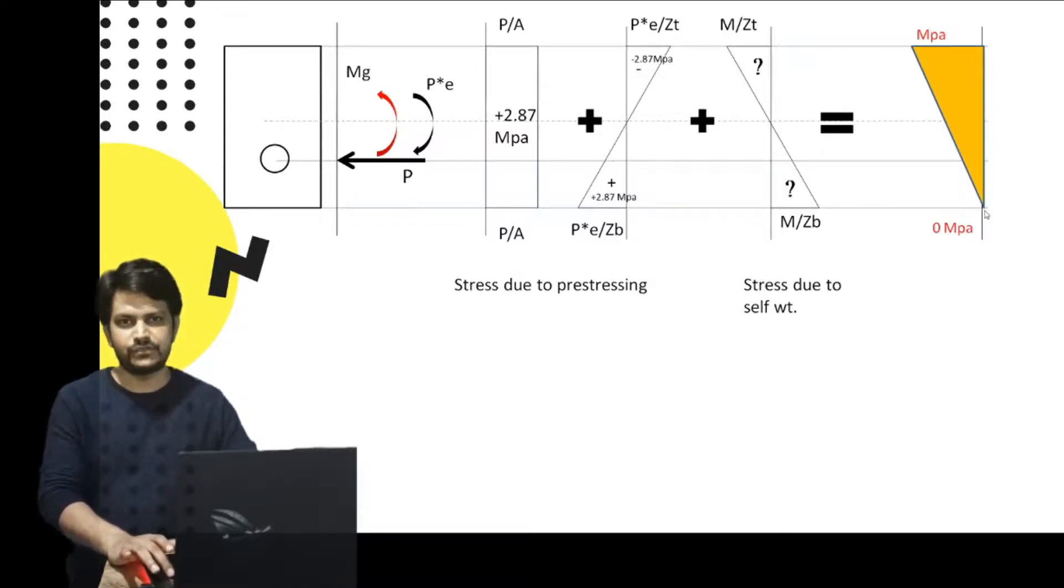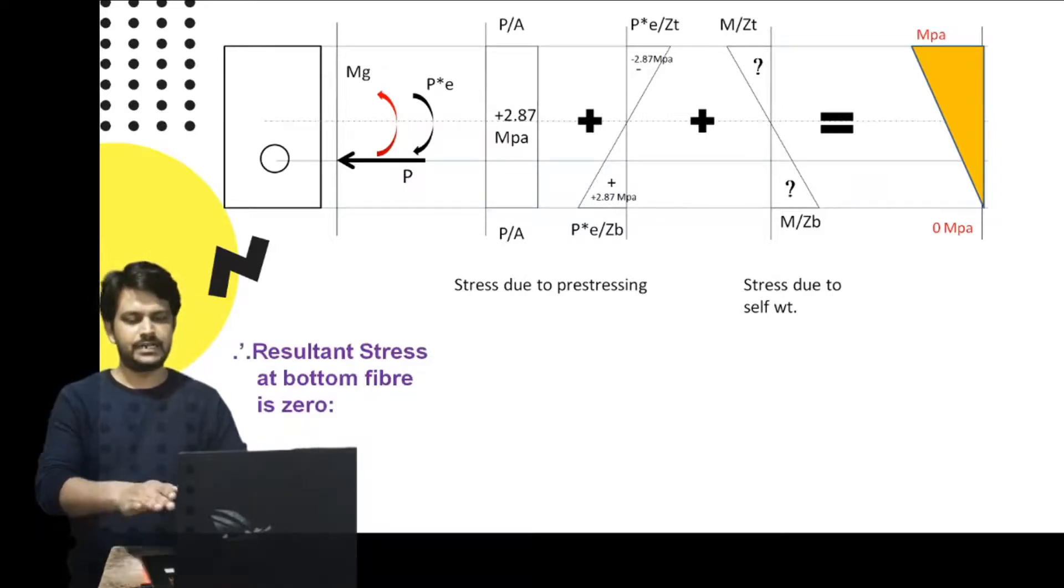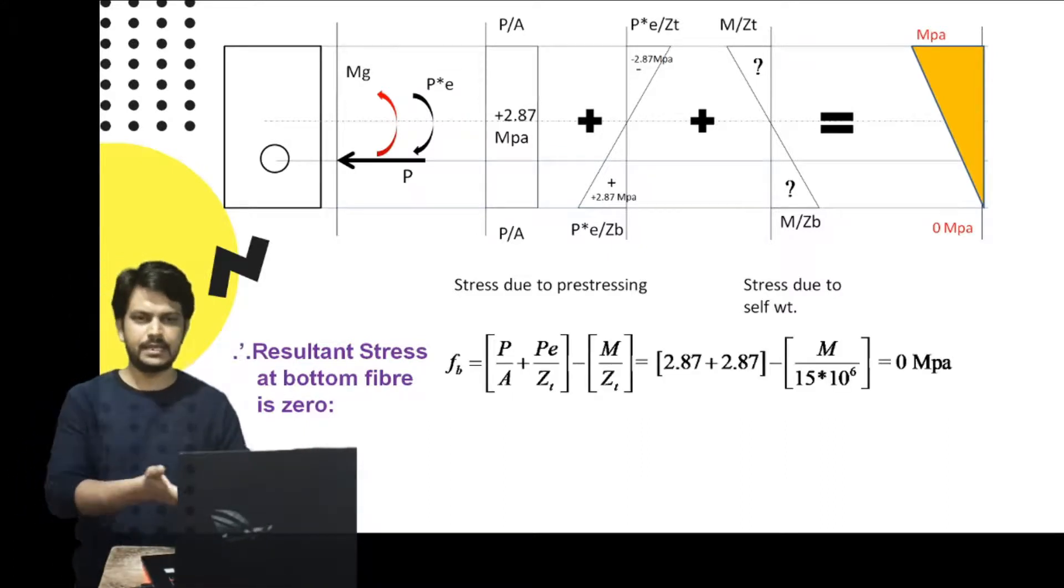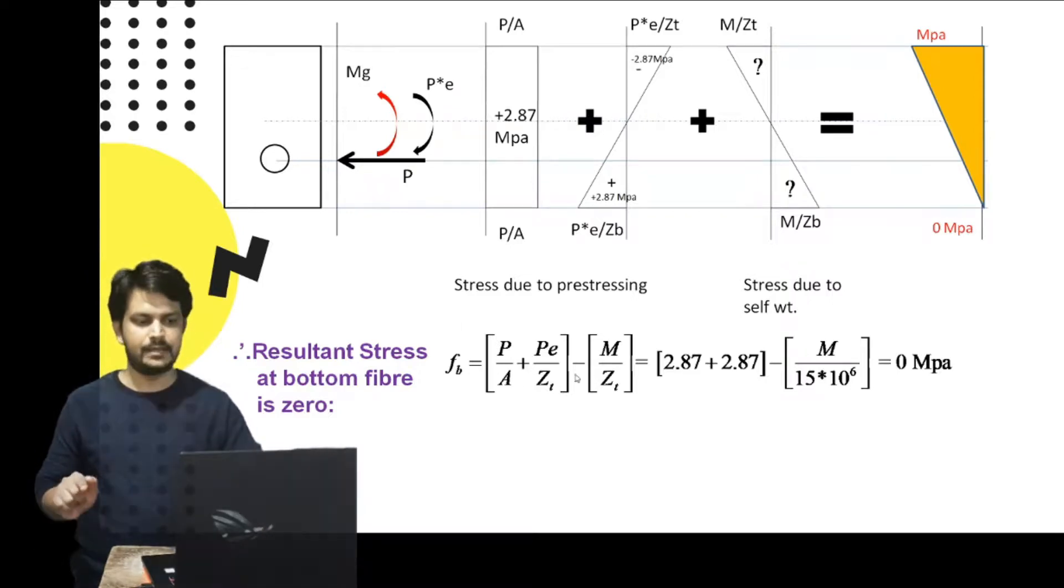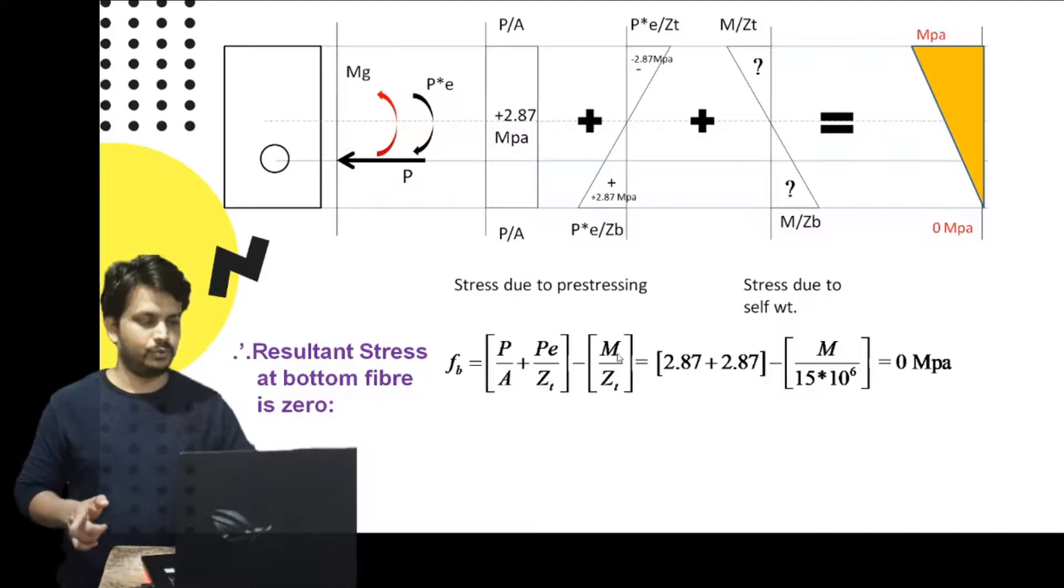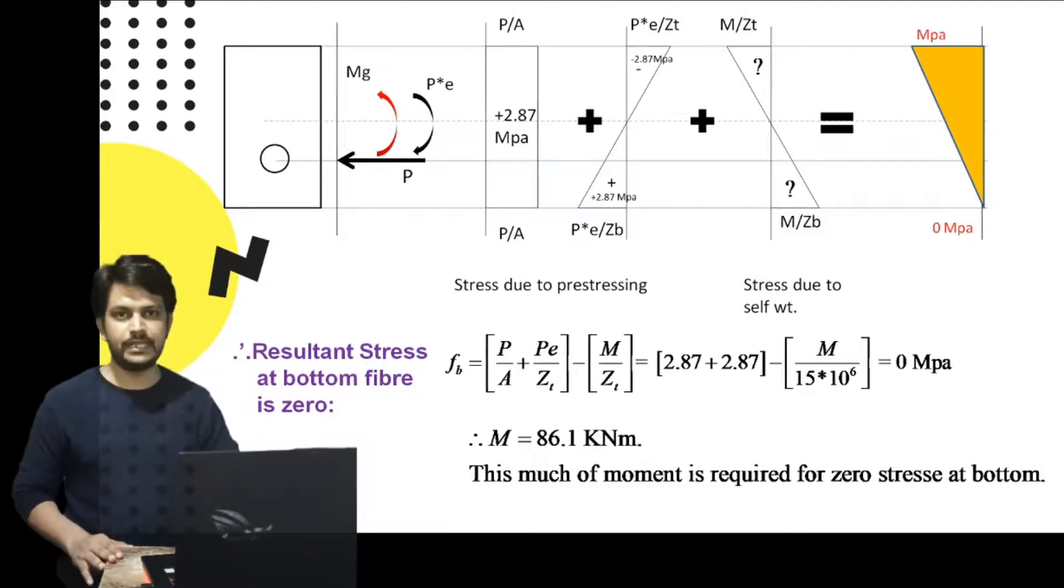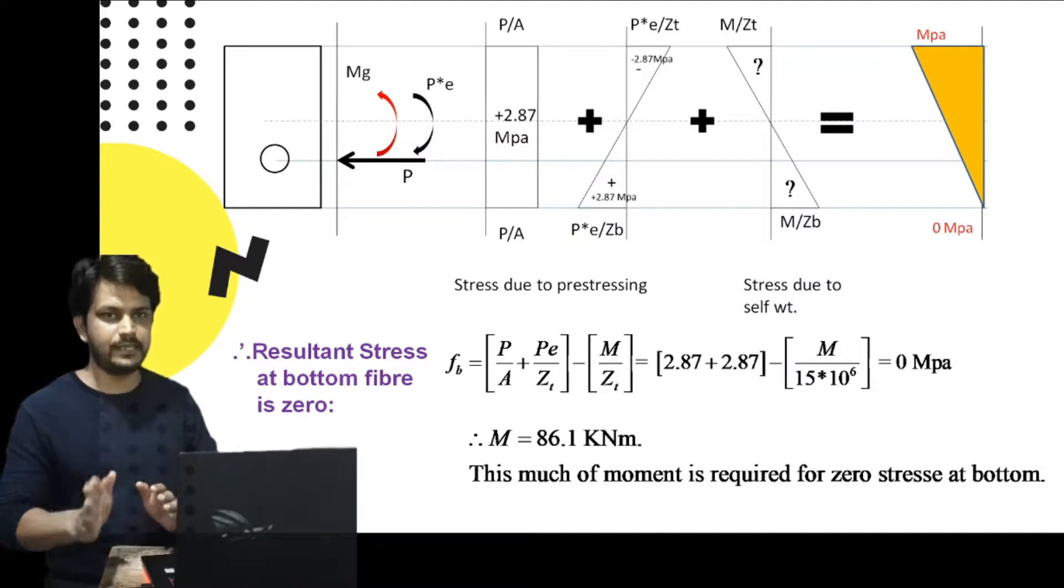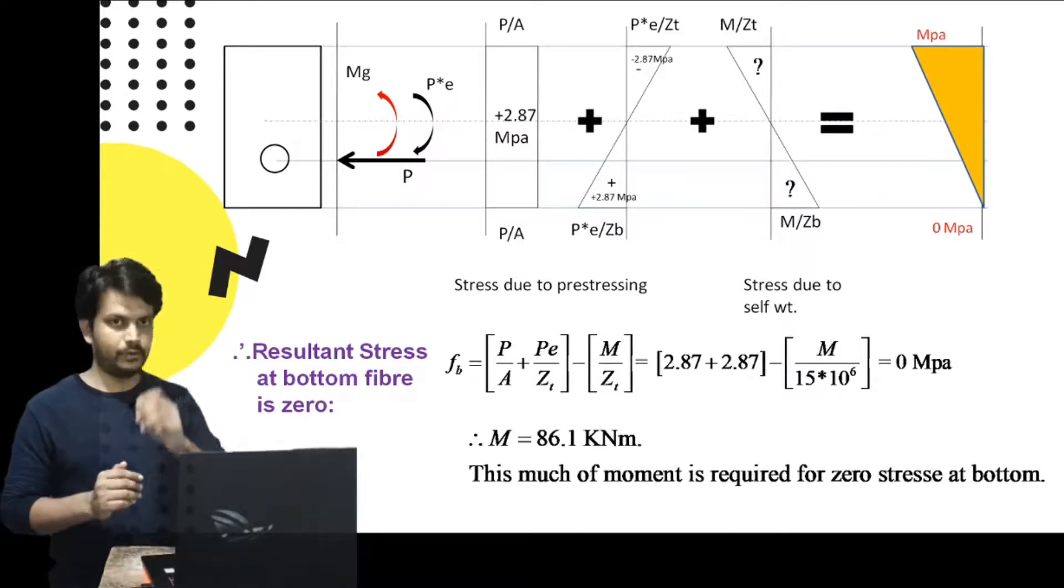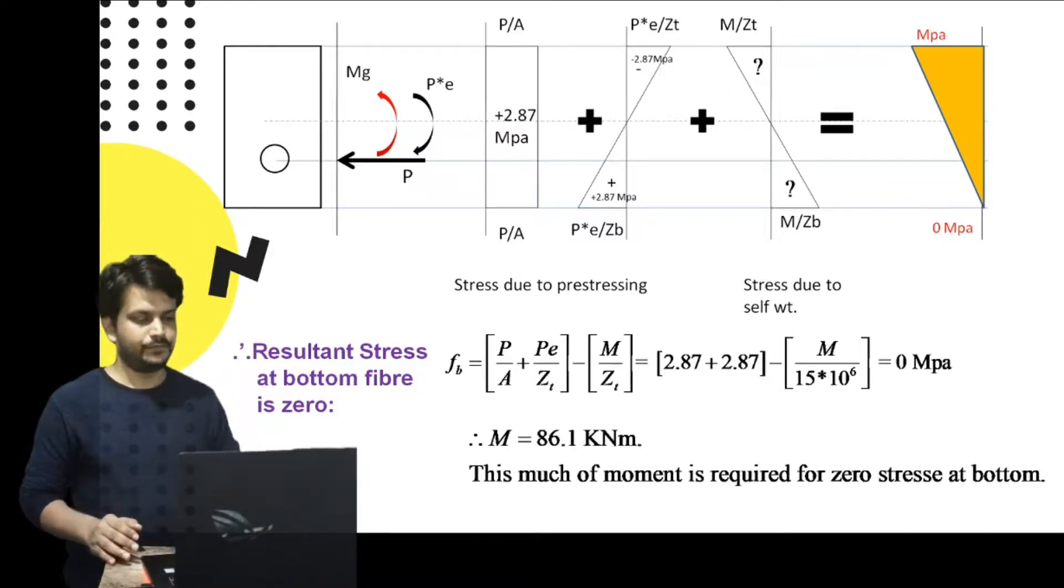The solution is simple. I have to write the equation for bottom stresses. Resultant stress at the bottom fiber, which is zero, is equal to P by A plus Pe by Z minus M by Z equals zero. This is the equation for bottom stresses which comprises of P by A plus Pe by Z at the bottom, plus prestressing at the bottom, minus M by Z where M is unknown. Putting the value of all these and equating to zero because the bottommost stresses are zero, we get the value of M to be 86.1 kilonewton meter. So the moment that can be applied without bottom stresses being tensile is 86.1 kNm.